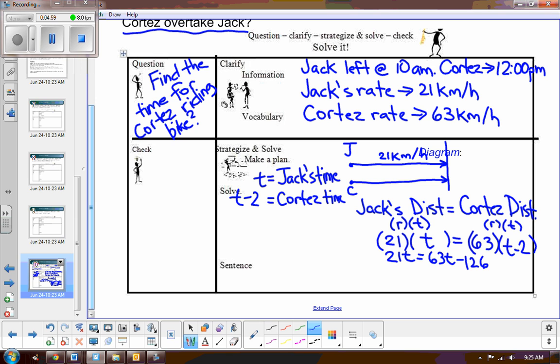So I'm going to add 126 to this side, and then I'm going to subtract 21T, and I believe I get 42T. And then I'm going to divide by 42, and I'm hoping that this comes out to a whole number. Let's see. 42 times 2 is 84. 42 times 3 is 126, yes. So T equals 3.